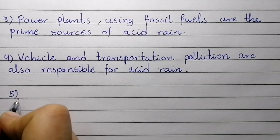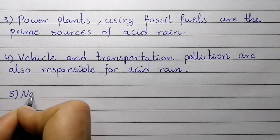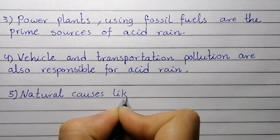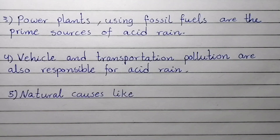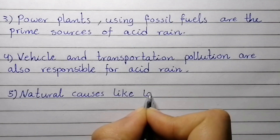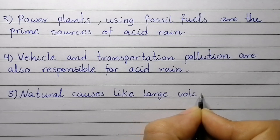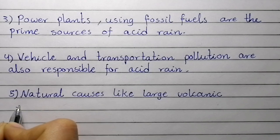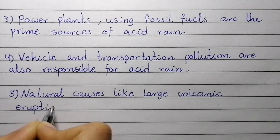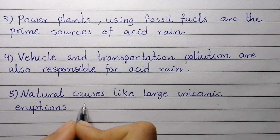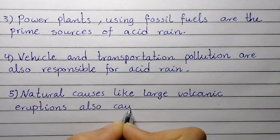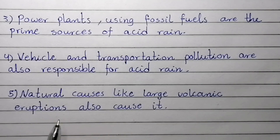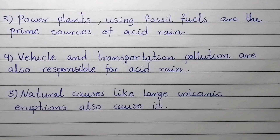Point number five: natural causes like large volcanic eruptions also cause acid rain.